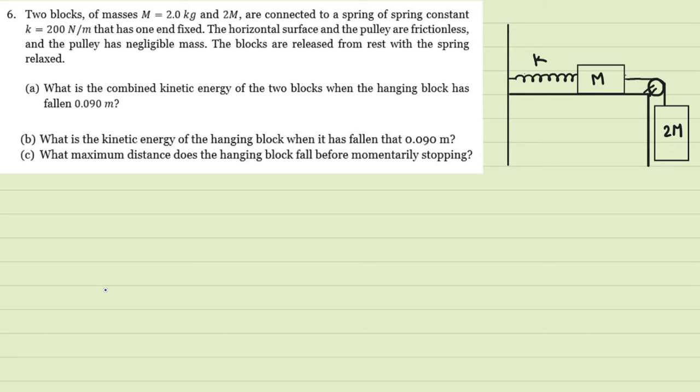The first question talks about what's the combined kinetic energy of the two blocks when the hanging block has fallen 0.09 meter. What is the kinetic energy of the hanging block when it's fallen 0.09 meter? What's the maximum distance does the hanging block fall before momentarily stopping?